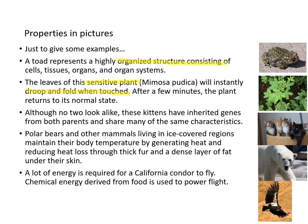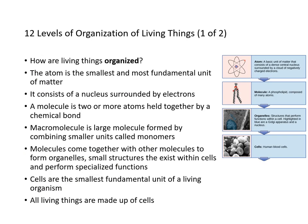These kittens have inherited genes from both parents and share many of the same characteristics. Polar bears and other mammals living in ice-covered regions maintain their body temperature by generating heat and reducing heat loss through thick fur — that is adaptation to environmental change. A high-flying California condor uses chemical energy derived from food to power its flight, which requires energy processing and metabolism.